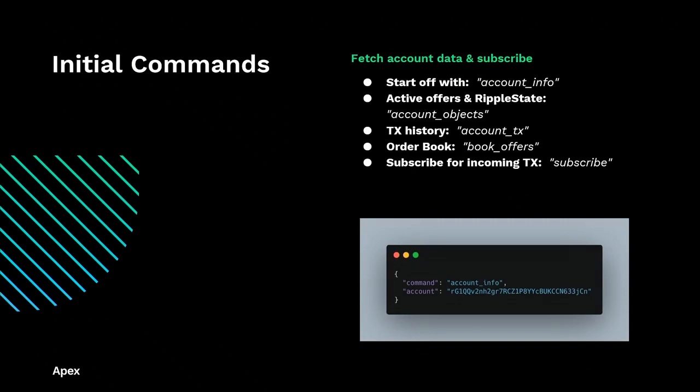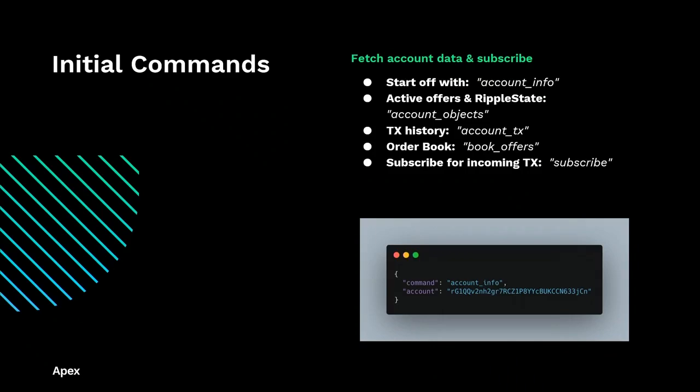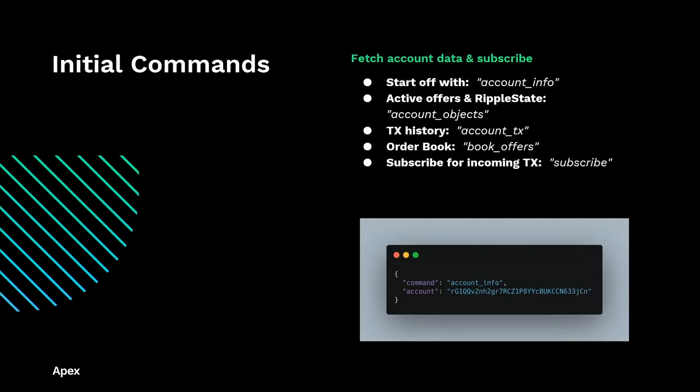After we know all that, we go into the active orders and ripple state. We get those two with the account objects method. The active offers are basically the offer objects on the ledger, and the ripple state is your IOUs, assets, or the trust lines you have set up on your account — we need to know that to parse later on. The transaction history is to see what the closed offers are, so we can show the user their past offers. The order book is very important for traders to know what the liquidity is and what prices orders are going for. We subscribe to that and also to the account, so we get all incoming transactions and can notify the user about what's happening to their offer.